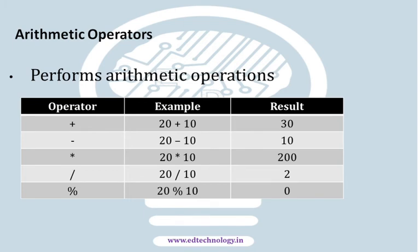First of all we are going to talk about arithmetic operators. They are the ones used for performing mathematical functions. The symbols include plus, minus, star, and slash which represent addition, subtraction, multiplication, and division. We have two operands and based on that we get the results. There is one more operator which is the percentage symbol for modulo, which gives you the remainder. To find out the remainder we use the modulo operator.